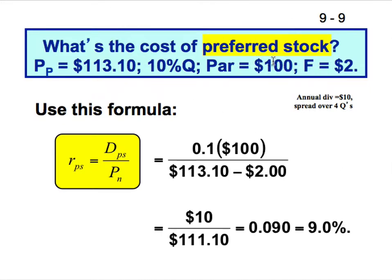What's the cost of preferred stock? Suppose preferred stock is currently trading at $113.10, paying 10% quarterly with a par value of $100, and the flotation cost is $2 per share. Using the formula — the current price equals the dividend stream divided by the interest rate — the dividend is 10% × $100 = $10 annually, or $2.50 quarterly. After subtracting the $2 flotation cost, the cost of preferred stock is approximately 9%.